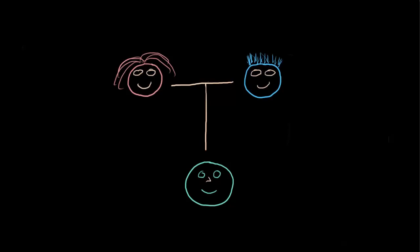Now Ian is an accountant, so he will be considered middle class. And if this triangle represents the upper class at the top, middle class in the middle, and lower class at the bottom, he would typically be considered as an accountant to be in the middle class.